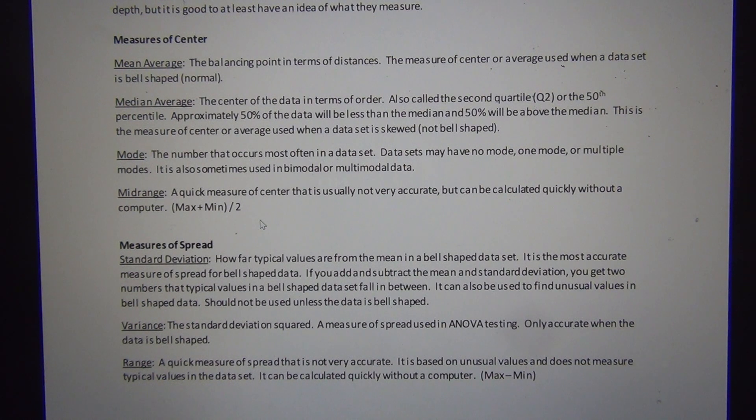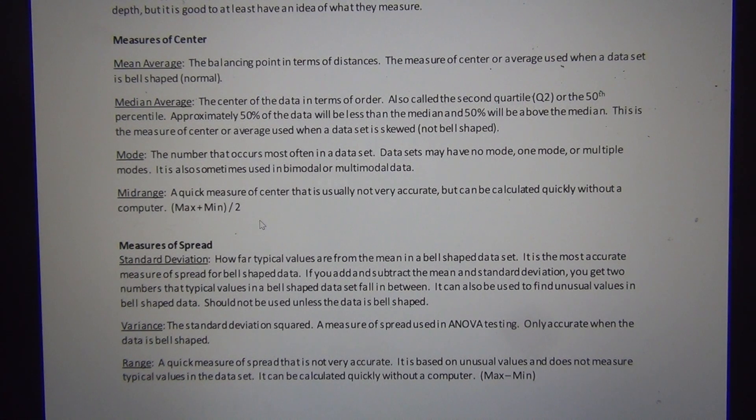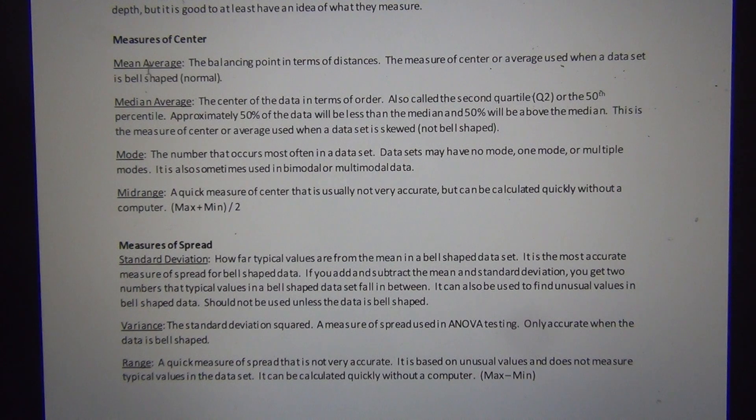But it's not very accurate. The mid-range is an easy to calculate average, but it's not super accurate. The mean and median are much more accurate. The mid-range is basically calculated by going halfway between the max and the min, so the biggest number plus the smallest number divided by two. That's called the mid-range. So we have four measures of center or average: mean, median, mode, and mid-range.